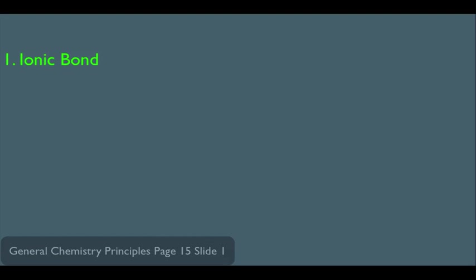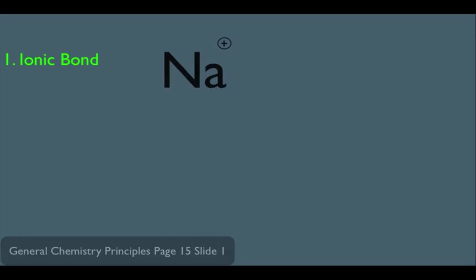Let's talk about the different types of bonds that we observe in chemistry. The first type of bond we should learn is the ionic bond. An example of that would be sodium with fluorine. Sodium is attracted to fluorine simply because positive is attracted to negative. Due to electronic configuration, sodium likes to be positive and fluorine likes to be negative, which causes these two elements to want to bond together.